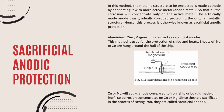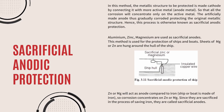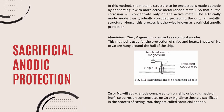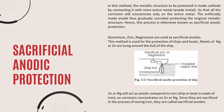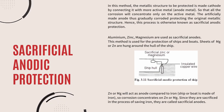The artificially made anode is gradually corroded, thereby protecting the original metallic structure. Hence this process is called sacrificial anodic protection. For example, aluminium, zinc, and magnesium are used as sacrificial anodes. This method is generally used for the protection of ships and boats, where sheets of magnesium or zinc are hung around the hull. Magnesium or zinc acts as the anode compared to iron, which is the metal most ships and boats are made of. Corrosion concentrates on the zinc or magnesium only.